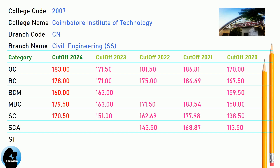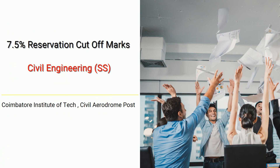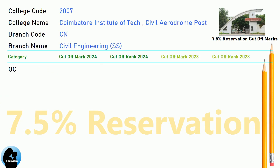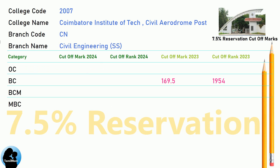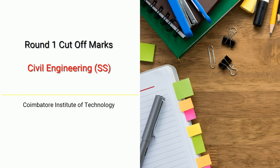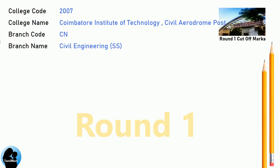DNA Round 3 and Round 4 Cut-Off for Coimbatore Institute of Technology. DNEA Round 1 Cut-Off for Coimbatore Institute of Technology in Civil Engineering.